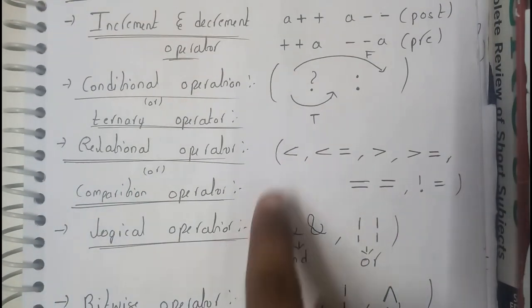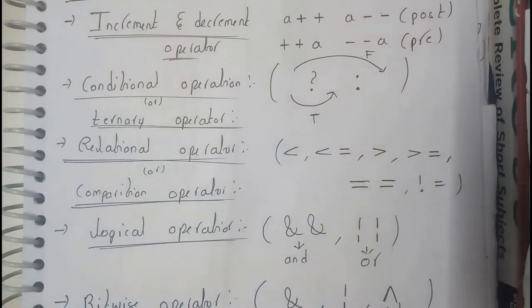Relational operators are nothing but less than, greater than, greater than or equal to, less than or equal to, double equal to, not equal to.